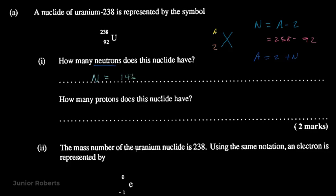It also asks how many protons this nuclide has. We can tell the number of protons by considering the nuclide notation. The atomic number is also known as the proton number. So in this case, the number of protons is equal to the atomic number, which is 92.